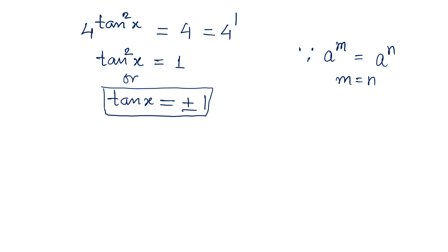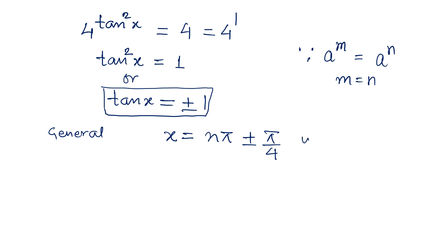For the general solution, we can write x = nπ ± π/4, where n is any integer — whether positive or negative, it does not matter.